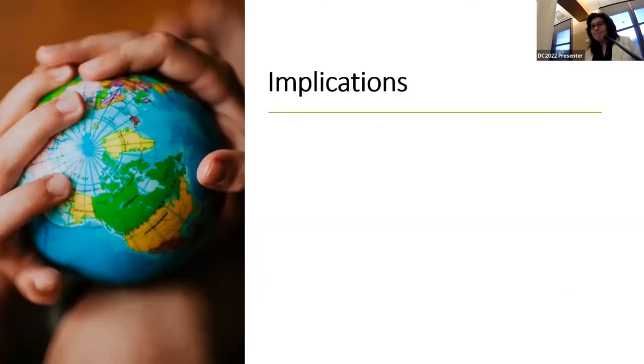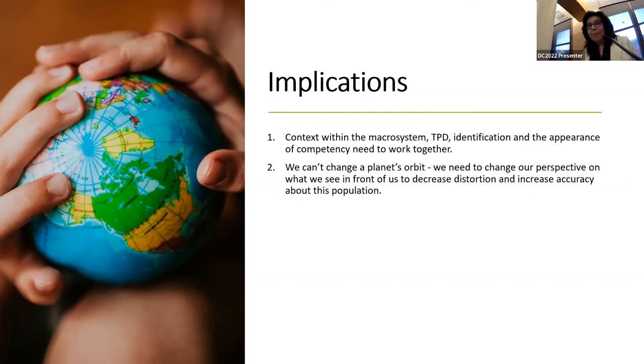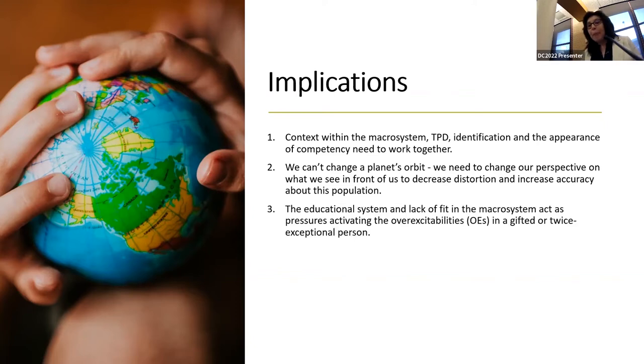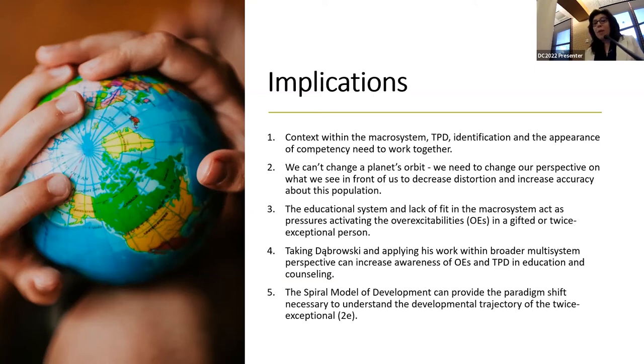Some implications to think about. Context within the macro system, TPD identification, and the appearance of competency, they all need to work together. We can't change a planet's orbit. We need to change our perspective on what we see in front of us to decrease distortion and increase accuracy about these populations. The educational system and lack of fit in the macro system act as pressures, activating the overexcitabilities in gifted and twice exceptional persons. Taking Dabrowski and applying his work within broader multi-systems perspectives, we can increase the awareness of OEs, but not just OEs, TPD, in education and counseling. And finally, the spiral model of development can provide the paradigm shift necessary to understand the developmental trajectory of the twice exceptional.